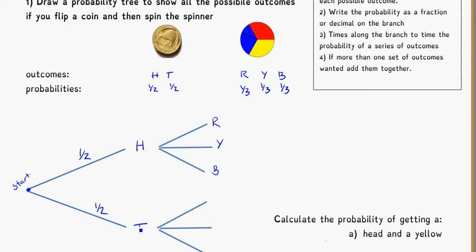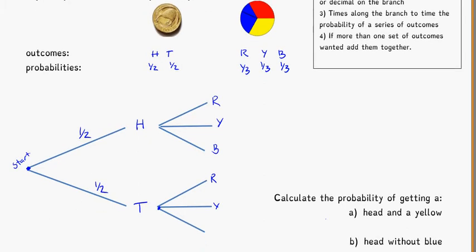I have to have the same options available if I end up flipping a tail, which is why we repeat it down here. I could get a tail first, but then I still have the options of red, yellow, or blue. It's a slight redundancy, but it allows me to trace every possible outcome — head and red, tail and red, and all available possibilities. For each of these branches I need to put in the probability: red is 1 third, yellow is 1 third, and blue is 1 third. And again 1 third, 1 third, and 1 third for the tail branch. This shows me all my outcomes.